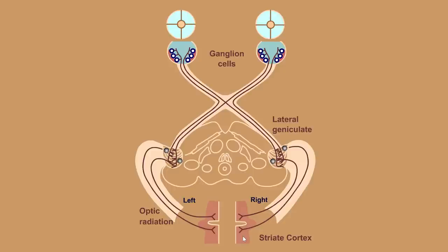The end result is that the left half of the visual world of each eye is now in the right thalamus and the right cortex — very similar to sensory information. Just as sensory information from the left side of your body ended up in the right postcentral gyrus, sensory information from the left half of your visual world goes to the right visual cortex.